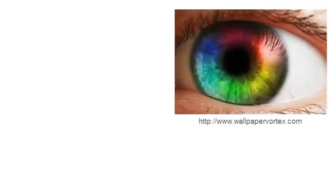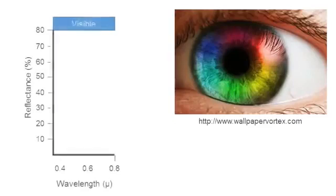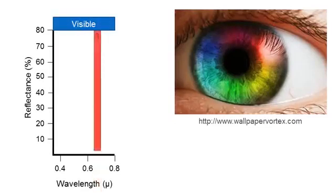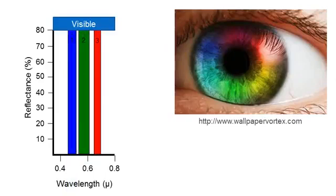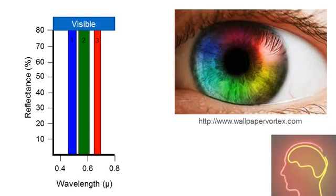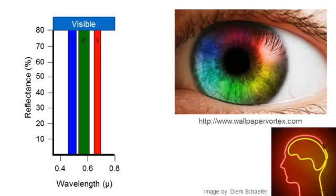Our eyes accomplish this task by differentiating three different bands of energy: the red band, the green band, and the blue band. Within our eyes, sensors actually react to energy within these narrow ranges and shuttle that signal to our brains, where our images are formed.